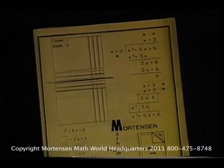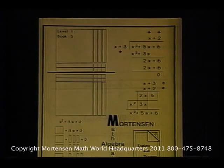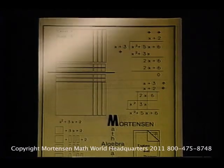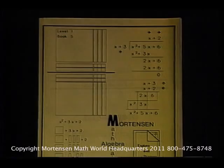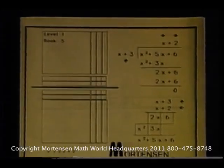In book 5 level 1, there are pictures of blocks that are not shaped into rectangles. We must decide what rectangle could be built with these blocks. Let's do several on screen.